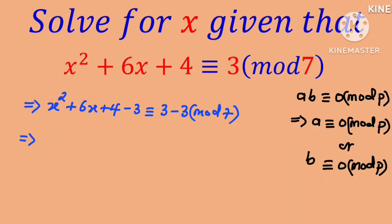This again implies that x squared plus 6x plus 1 is congruent to 0 in mod 7.